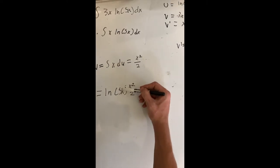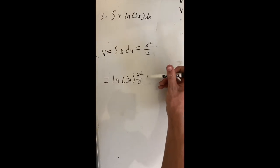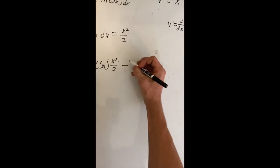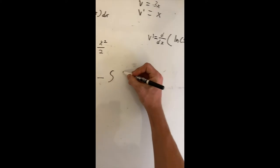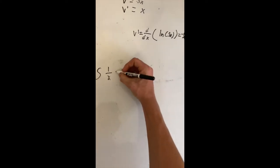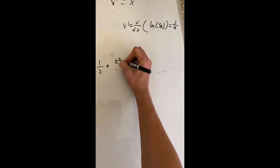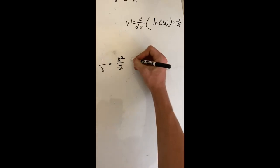du, and the u. And then I'm going to subtract the integral of 1 divided by x multiplied by x squared divided by 2 dx.